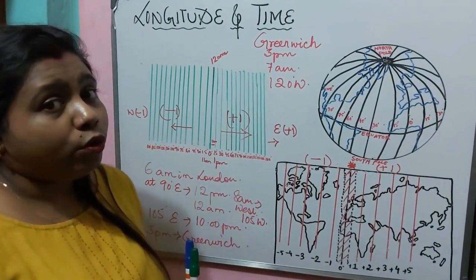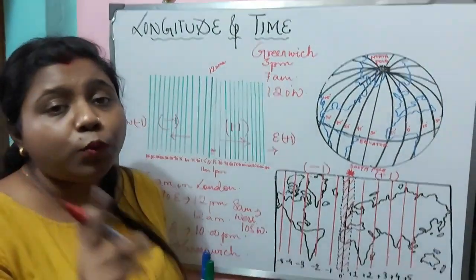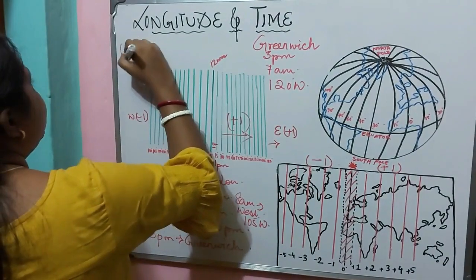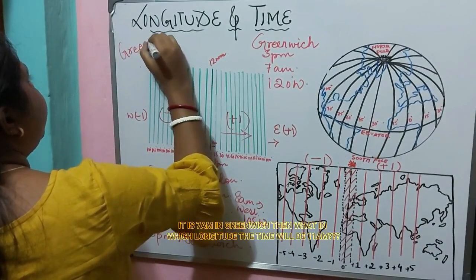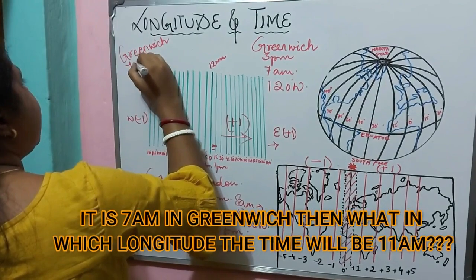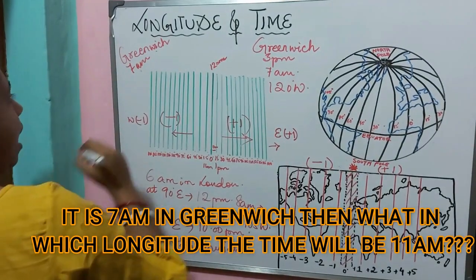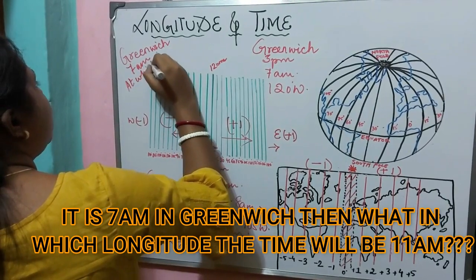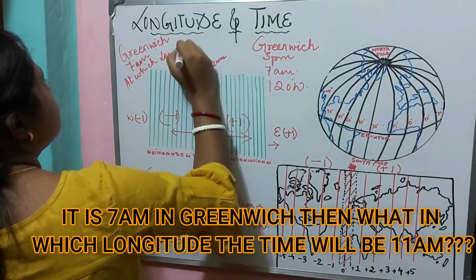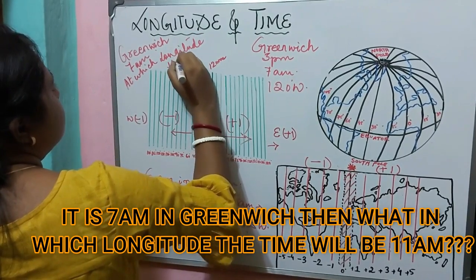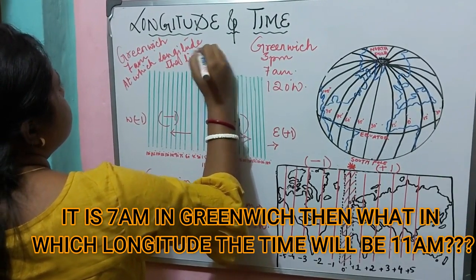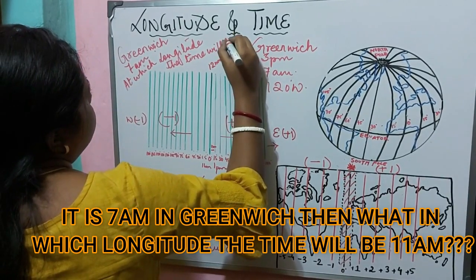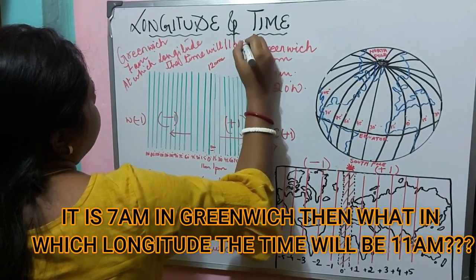Let me give you one more question and you will give me the answer in the comment box. You know the time of Greenwich is 7 am. At which longitude will the time be 11 am? All of you will provide this answer in the comment box.